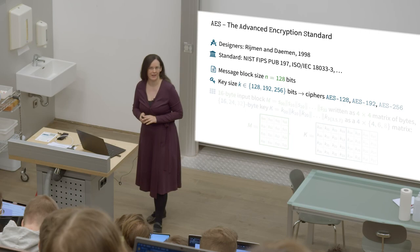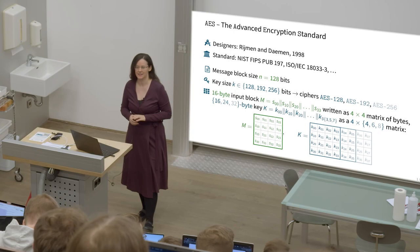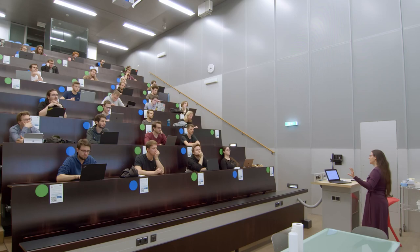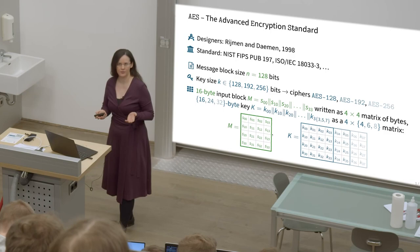It writes them in the form of a 4x4 matrix of bytes. We'll see this picture here on all of the next slides. Each of the cells in this matrix is one byte — eight bits. Both the message and the key are written in this shape. And what AES now does with this so-called state is it applies a couple of encryption rounds. Each round repeats the same operations.